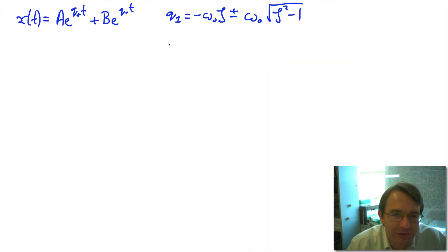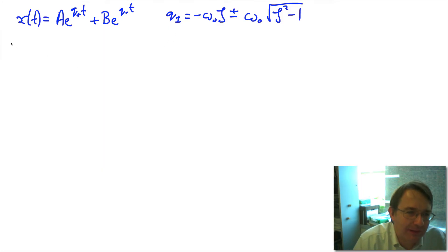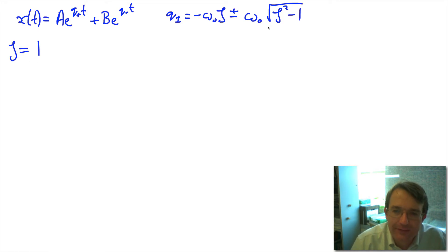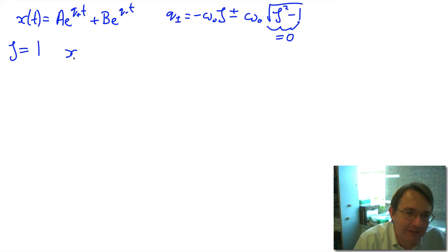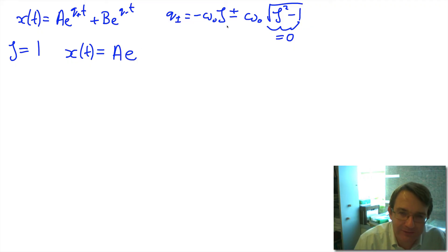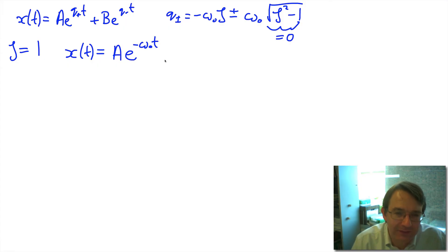Here we are back at our solution, and we've got our two values for q. Now we're going to look at the case where zeta is equal to one. When we put zeta equal to one, this square root goes to zero, and instead of having two solutions, our solution has collapsed — it's just collapsed to a times e to the minus omega-naught times t. So that suggests we've got an exponential decay, but we have a problem.